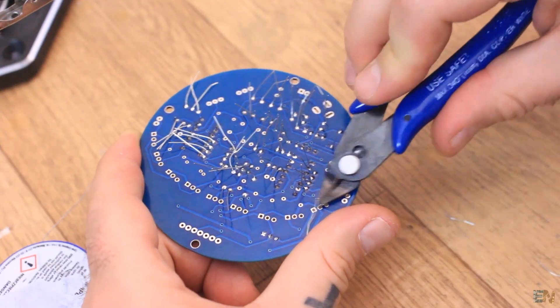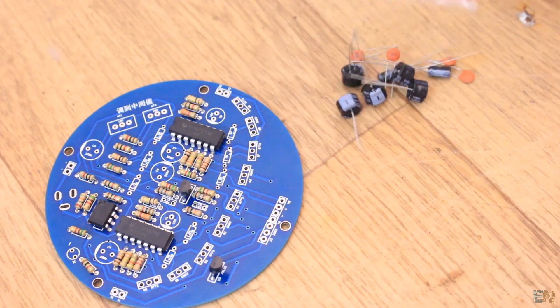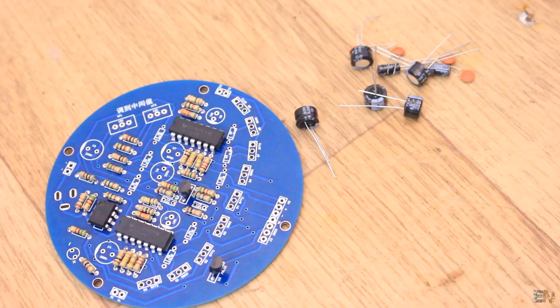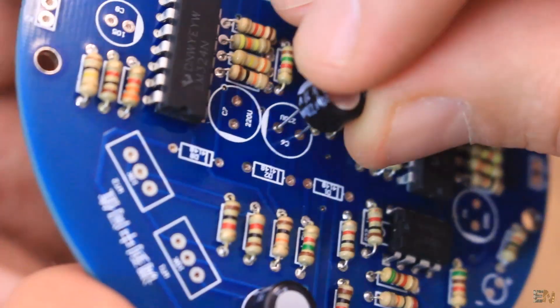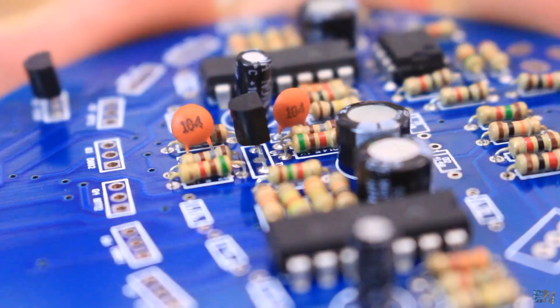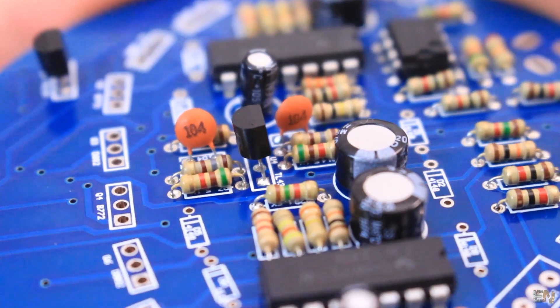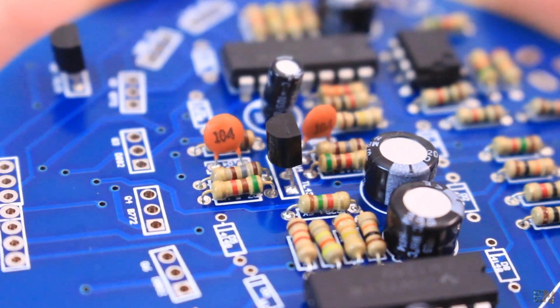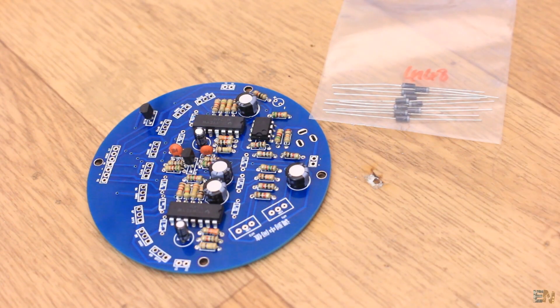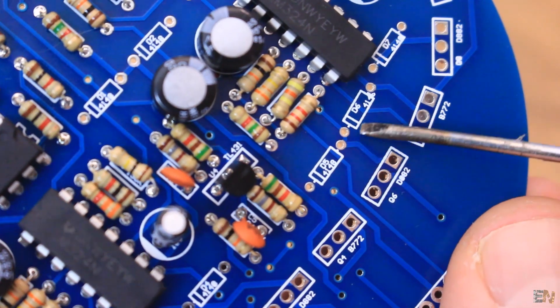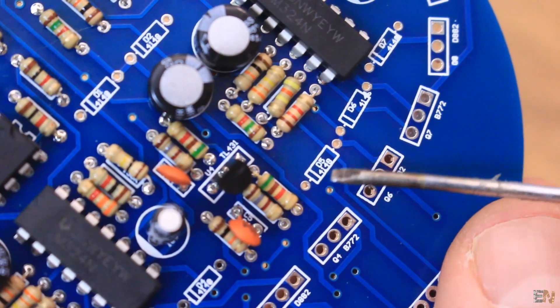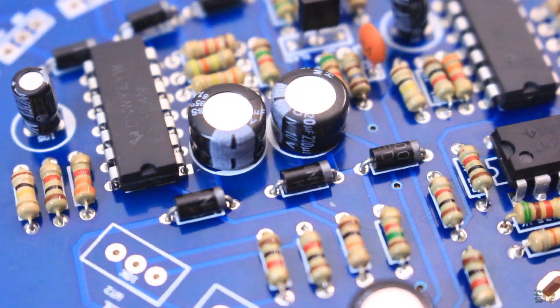Now that I have the resistors, I can add the capacitors. Make sure about the polarity of the electrolytic capacitors, but we also have two non-polarized capacitors of 100 nF. Now I place all the diodes. All diodes are the same, 1N4148 and we have all the cathodes marked on the PCB.